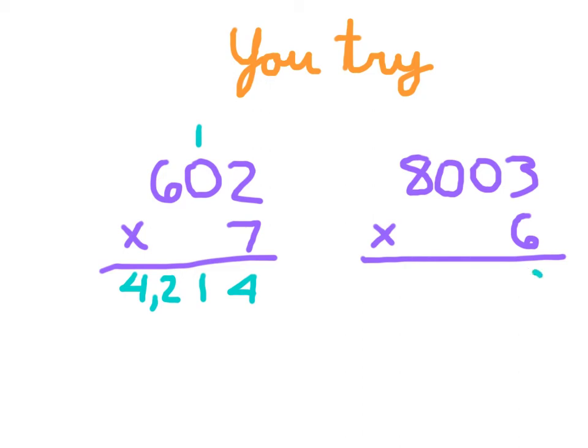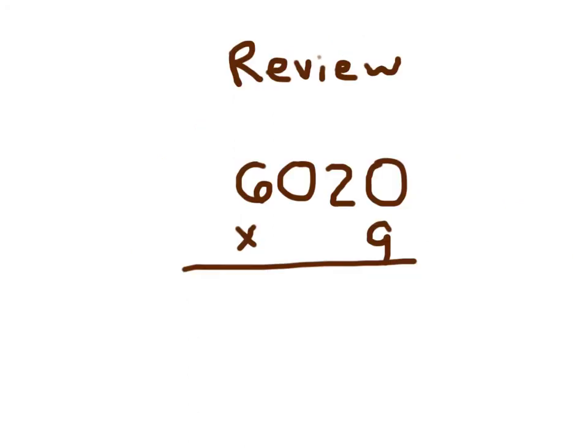6 times 3 is 18. Write 8. Regroup the 1. 6 times 0 is 0. Plus 1 is 1. 6 times 0 into the hundreds place is 0. And 6 times 8 is 48. So, 8003 times 6 is 48,018. 602 times 7 is 4,214.